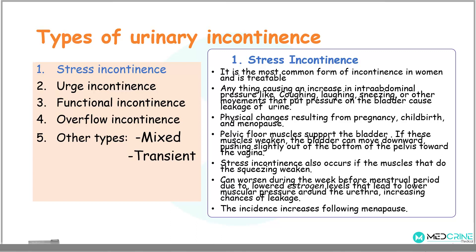Usually, the pelvic floor muscles support the bladder. If they weaken, the bladder moves downwards, pushing slightly toward the vagina in females. Stress incontinence occurs when these muscles that do the squeezing weaken. It is known to worsen during the week before menstrual periods because of lowered estrogen levels, which lead to lower muscle pressures around the urethral sphincter, increasing the chances of urinary leakage. This incidence increases with menopause.